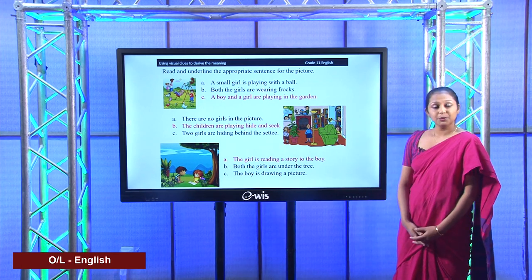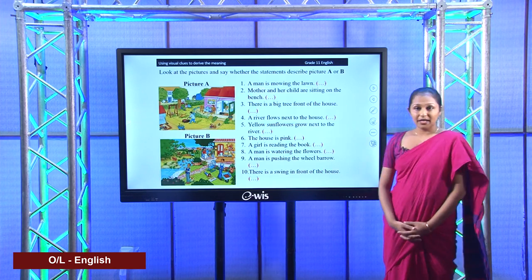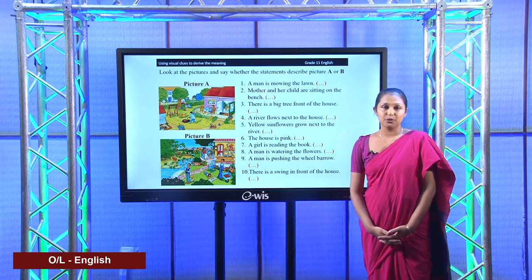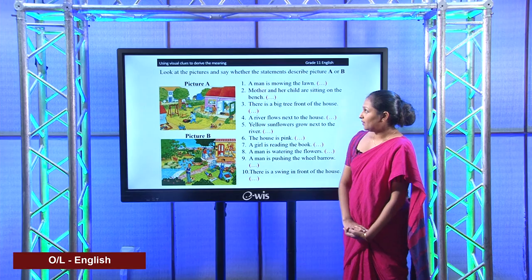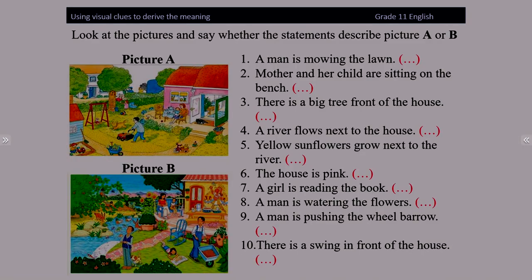Now I am going to take you to another activity. At the beginning of my lesson, I told you we are going to use picture clues to understand the meaning. Here, I have given you two pictures — picture A and picture B. I want you to observe these two pictures carefully. You can see some differences, but can you see the context or setting? Yes, these two pictures show a home garden. You have to look at the pictures and say whether the statements describe picture A or B. Go through these ten sentences carefully and find whether each describes picture A or picture B.